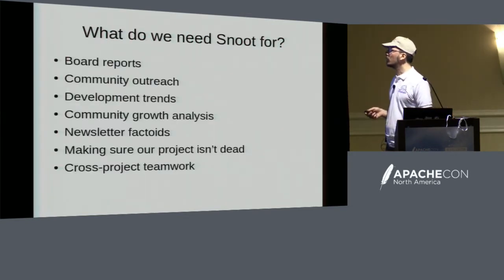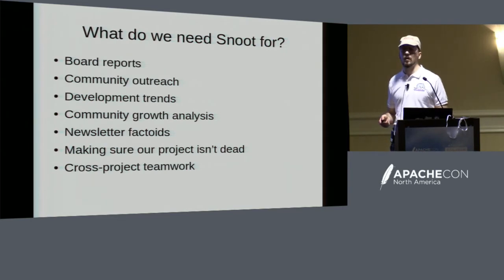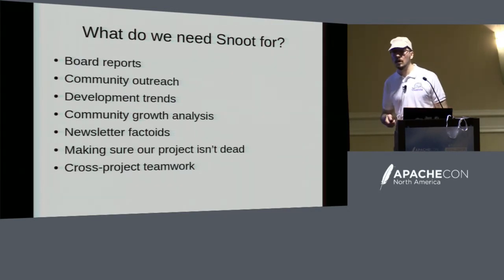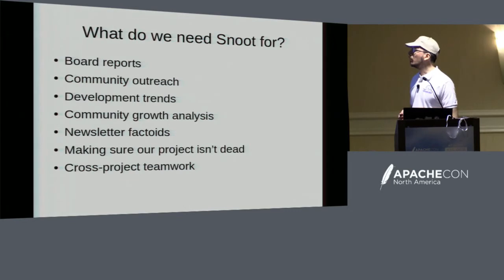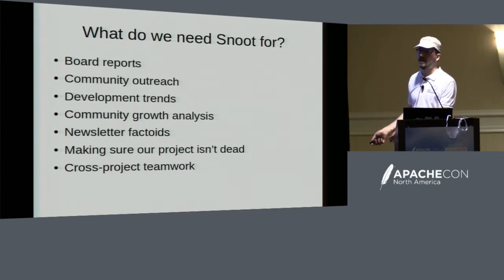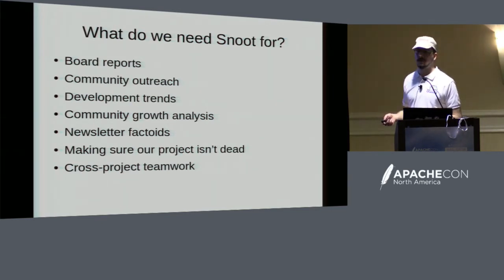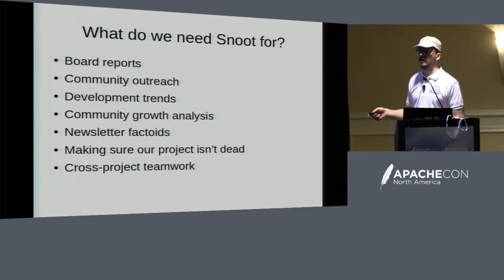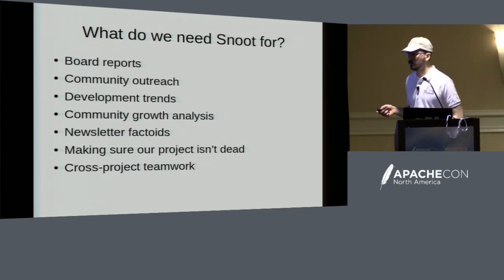So what do we need Snoot for? Most of all, for the ASF, it's for board reports and community outreach. It's for finding out what is going on in the projects, what are the trends — are we in a lull, are we steaming ahead full speed? We also need to see if the community is growing, if it's healthy, if we are inviting new committers in, if we have someone we should invite in — and making sure the project is not dead. You can also find out if there are other projects working on something related to what you do, or committers on two or three different projects you could work together with.